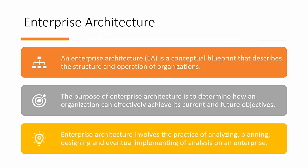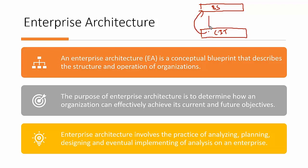Similarly in an organization, we run different technologies and services. To correlate all these elements we use an architecture. Your current IT structure needs to support your business strategy. By adopting architecture, we can organize all the processes, people, and parameters in proper sequence to align current IT with business requirements.